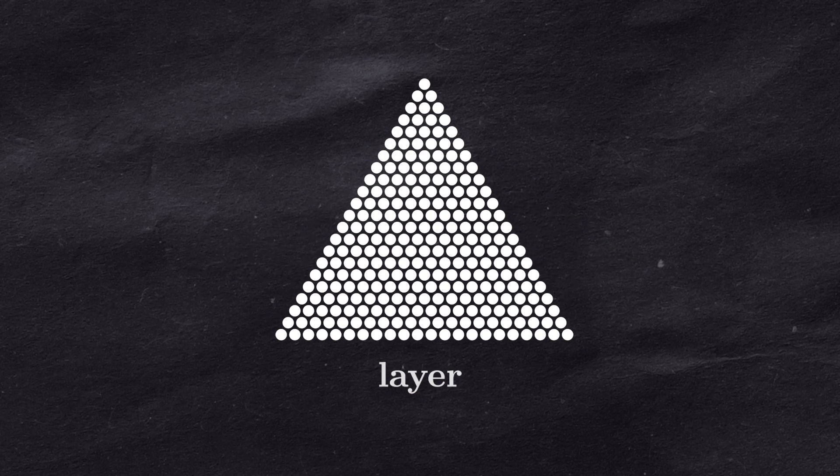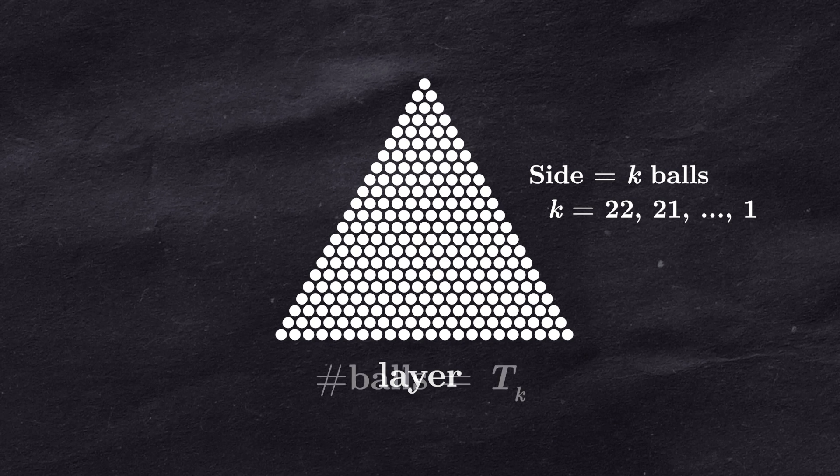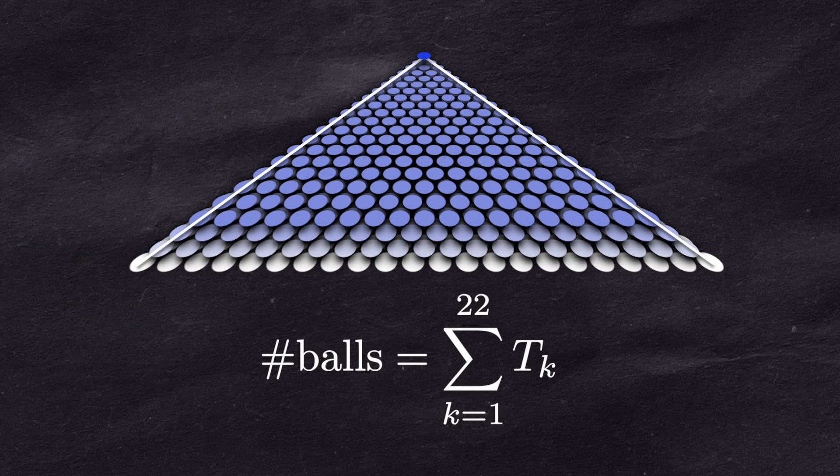Each of the layers was a triangle with side length equal to k, where k runs from 22 to 1. Let us denote the number of balls in a subtriangle with tk. Then our pyramid has exactly this many balls.